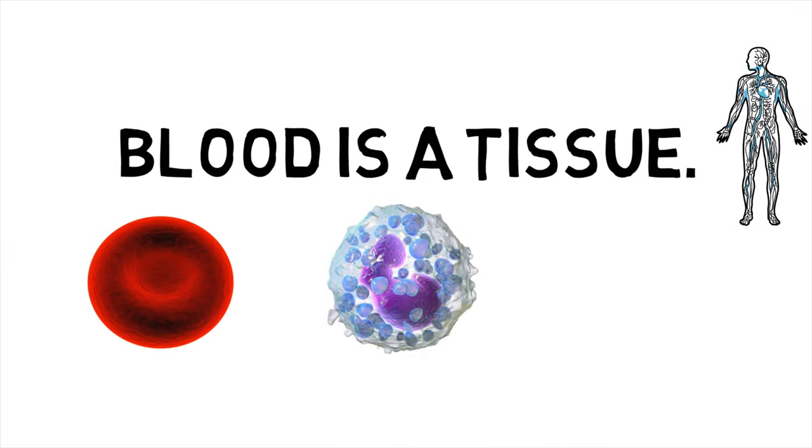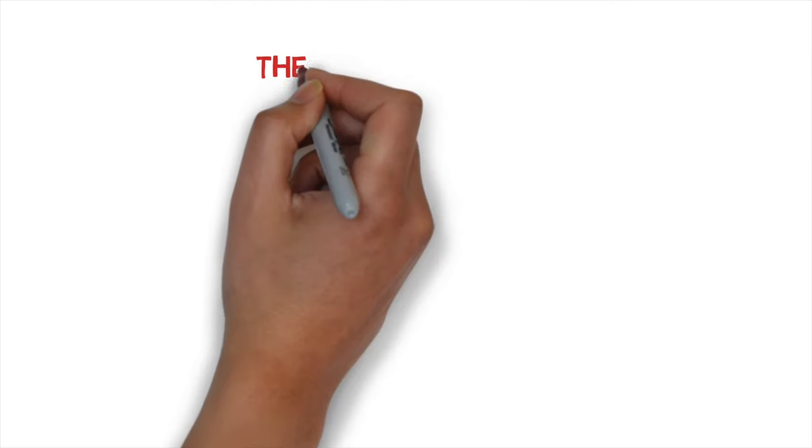So the cells that make up the blood are the red blood cells, the white blood cells, and the platelets. And what we need to do is to be able to describe how each of these do their job.